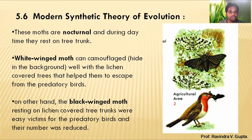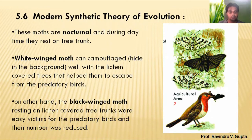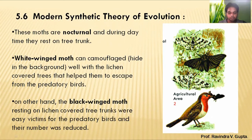Before 1845, there was no industry and no pollution in Great Britain, so lichen was growing extensively on tree trunks. The color of the lichen and the white-colored species were the same, so predatory birds could not see the white moths. But the black color created a contrast on the lichen-covered tree, making black moths visible and easy targets.